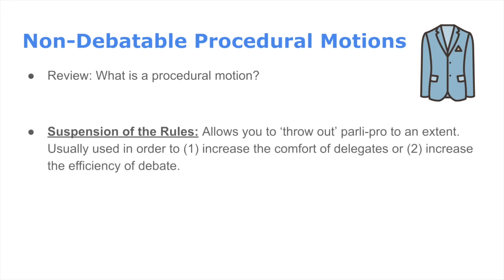Let's go to the first one: suspending the rules. This essentially gives you the power to request throwing out any of the Parley Pro rules. This moves debate technically from formal debate to informal debate, but that doesn't mean it's pandemonium — it doesn't mean you're moving into unmoderated caucus or anything like that. You simply have to specify what in particular you want to change when you're making the motion.